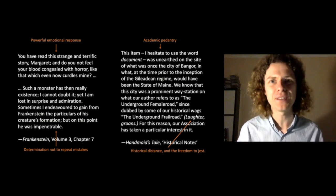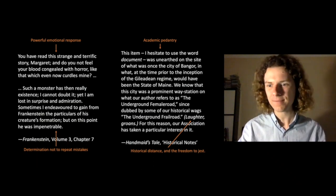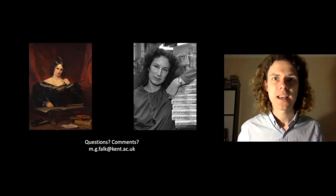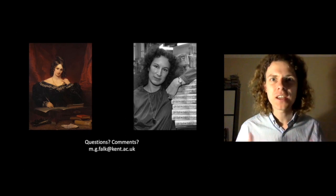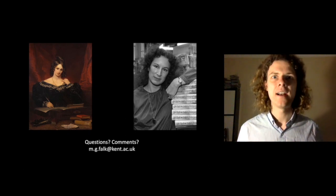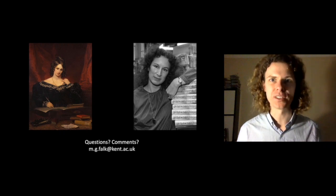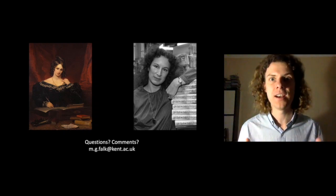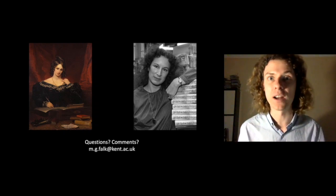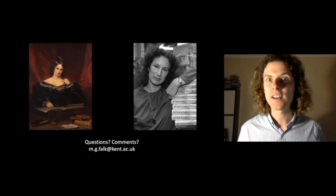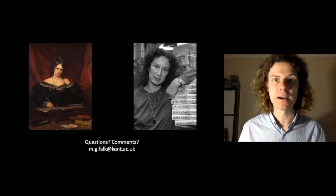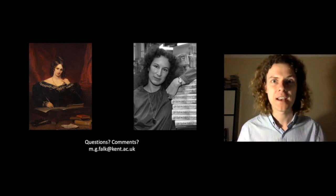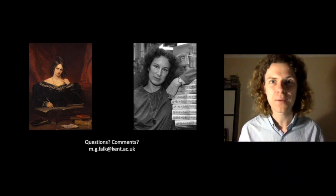Frankenstein is in a way the more optimistic book, because it says language has the power to overcome oppression, and when the creature's story is told it invokes horror and people try not to repeat the mistake. Whereas The Handmaid's Tale — a really brutal and savage tale — when it's told, Atwood suggests, people just laugh and joke about it, and it fades into the past, leaving open the possibility that all of this will happen again and we'll forget the lessons. So it ends on quite a pessimistic note. I hope you enjoyed that lecture on Mary Shelley's Frankenstein and Margaret Atwood's The Handmaid's Tale. If you have any questions, feel free to email me at mgfalk@kent.ac.uk. Good luck with your English A-Level.